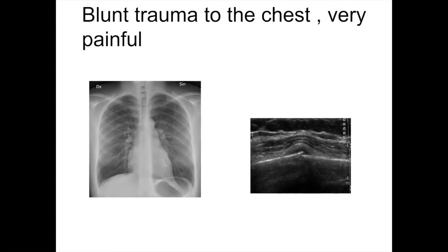Let's look at some other cases. This is a patient who fell on their right side with point tenderness over the lower posterior rib. The chest x-ray is normal. In the NHS, the patient would be told it could be bone or soft tissue injury. But if you do an ultrasound, you may see a non-displaced rib fracture — loss of cortex and subperiosteal fluid and blood.